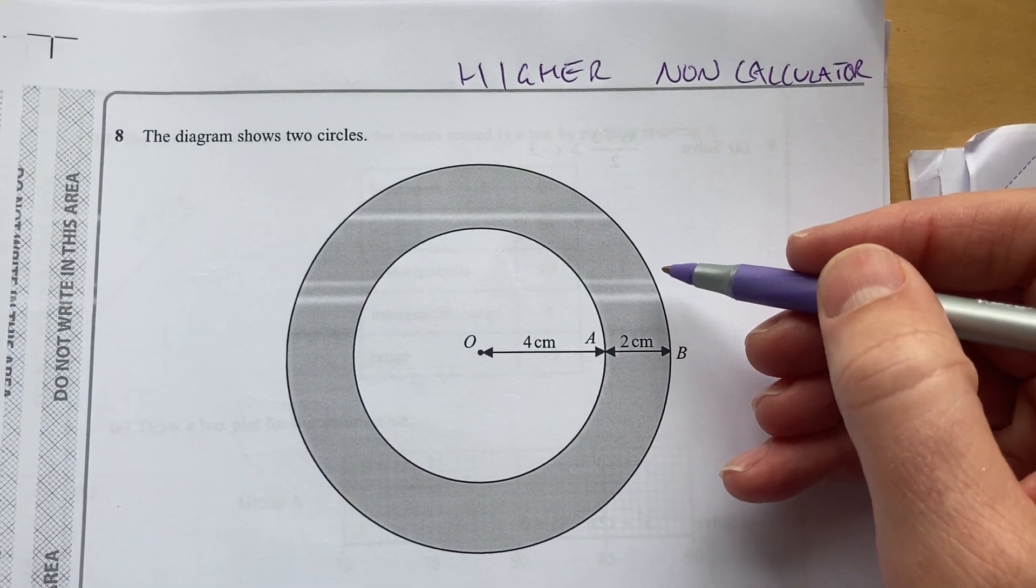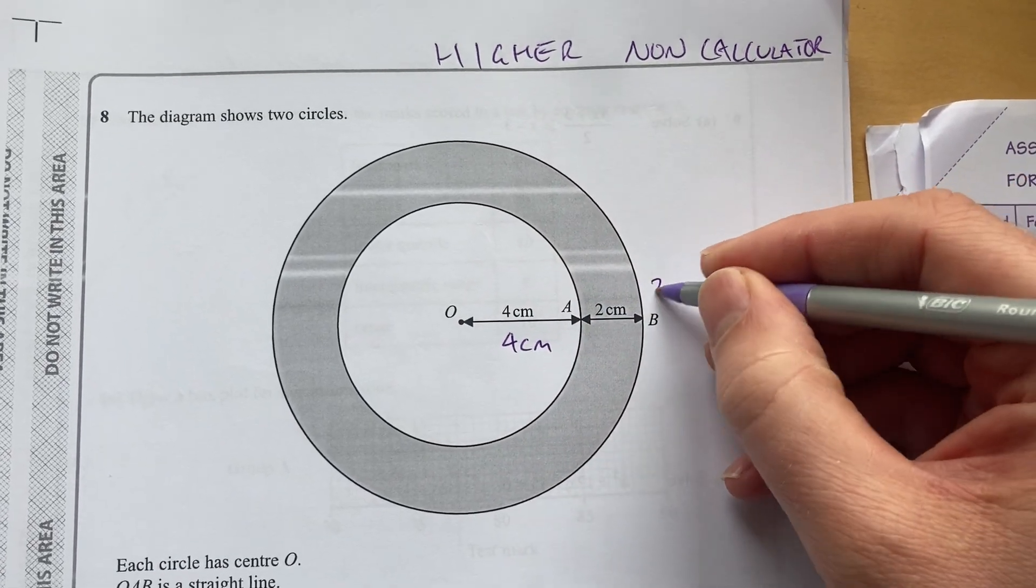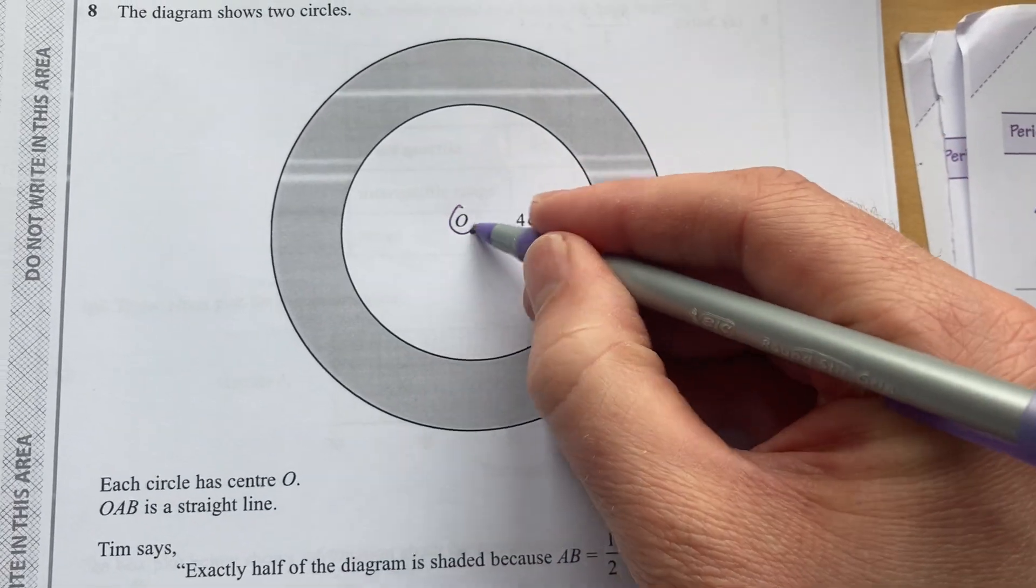Here is an image of two circles. This one has a radius of four. Add two centimeters to make the radius of the larger circle. Each circle has center O.